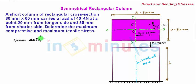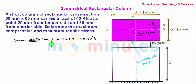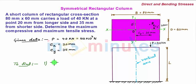In this problem the given data are: load P equals 40 kilonewtons, which equals 40 × 10³ Newtons; ex equals 20 mm; and ey equals 35 mm. We have been asked to find the maximum compressive stress and the maximum tensile stress.